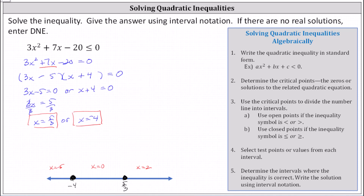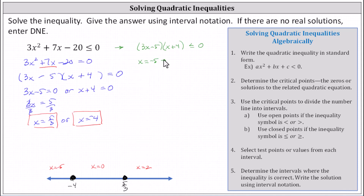Using the factored form (3x − 5)(x + 4) ≤ 0, we test x = −5. When x is −5, the factor 3(−5) − 5 is negative, and −5 + 4 is also negative. A negative times a negative is positive, and a positive value is never less than or equal to zero, so we mark this interval as false.